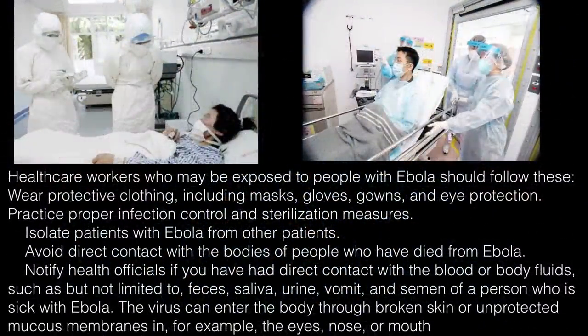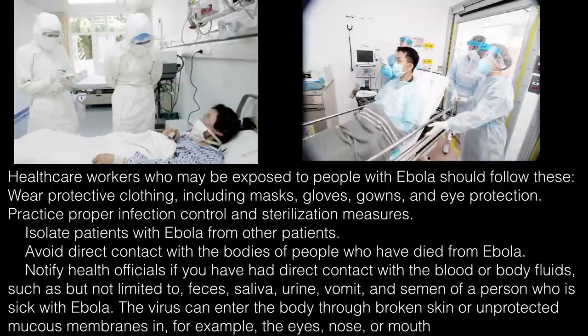Healthcare workers who may be exposed to people with Ebola should follow these steps: wear protective clothing including masks, gloves, gowns, and eye protection; practice proper infection control and sterilization measures; isolate patients with Ebola from other patients; avoid direct contact with the bodies of people who have died from Ebola; and notify healthcare officials if you have had direct contact with blood or body fluids — such as feces, saliva, urine, vomit, and semen — of a person sick with Ebola. The virus can enter the body through broken skin or unprotected mucous membranes, for example the eyes, nose, or mouth.